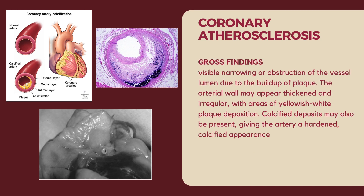The gross findings of coronary atherosclerosis show that affected coronary arteries may reveal visible narrowing or obstruction of the vessel lumen due to plaque build-up. The arterial wall may appear thickened and irregular with areas of yellowish-white plaque deposition. Calcified deposits may also be present, giving the artery a hardened calcified appearance. In advanced cases, affected arteries may show signs of luminal stenosis or occlusion, compromising blood flow to the heart muscle.